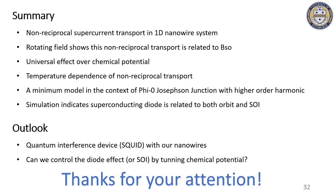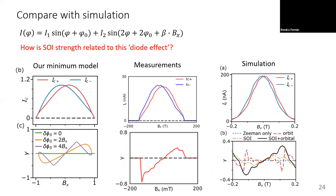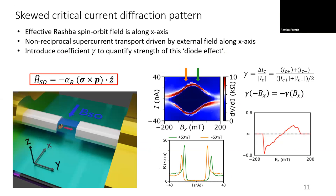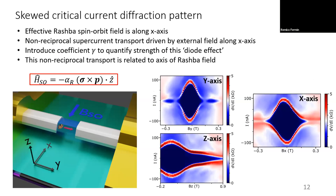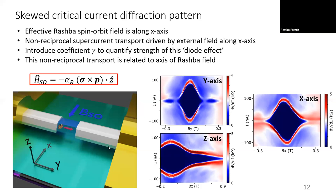Audience member thanks the speaker and notes the talk was clear. A questioner asks to see the interference patterns again and observes that the y-axis and x-axis have roughly the same periodicity in the two interference patterns, and asks whether the y-axis is along the wire. The speaker clarifies there was a labeling error in the figure — the axes should be swapped, so the y-axis is actually perpendicular to the wire. The questioner confirms this makes sense for a longer junction.